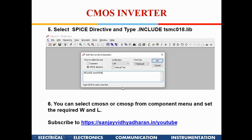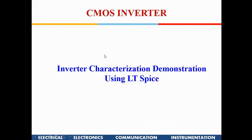Once you press OK, you are ready to go. In the component menu you will see CMOS N and CMOS P added as instances. You can invoke those instances and set the required W/L. Subscribe to this YouTube channel to keep updated with new lectures.